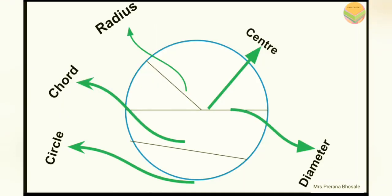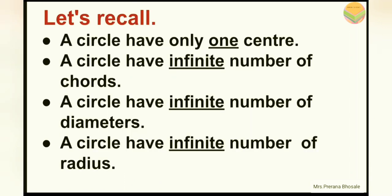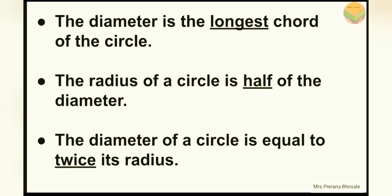Thus, today you have learned about circle, chord, radius, center and diameter. Now once again, let's recall what we have learned. A circle has only one center. A circle has an infinite number of chords. A circle has an infinite number of diameters. A circle has an infinite number of radii. The diameter is the longest chord of the circle. The radius of a circle is half of the diameter. The diameter of a circle is equal to twice its radius.